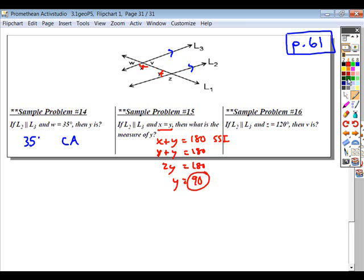And then the final example here. Again, the lines are parallel to each other. Angle Z is 120. And so what would angle the measure of V equal? Well, if this is 120, then the alternate exterior angle would be 120. And now the linear pair gives you your answer of 60.